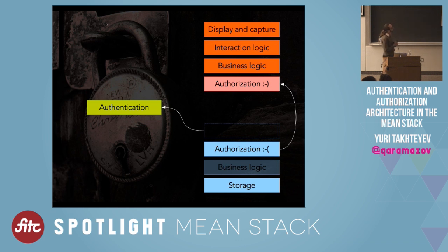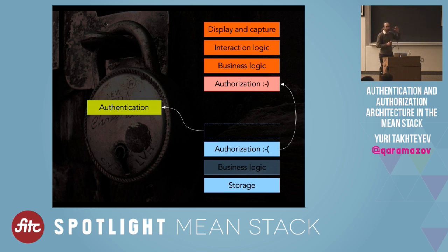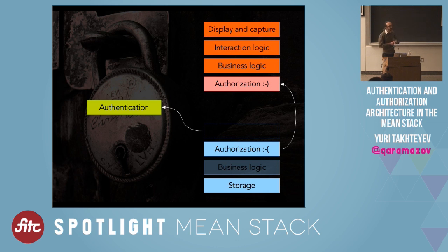I mark them as 'smiley face' and 'frowny face' authorization. The frowny face is real authorization — this is the server's approach, a good cop/bad cop approach. The server is the bad cop: if you send a request, the server checks if you're supposed to be doing it and sends back an HTTP error code saying you're not allowed. The client-side authorization code is the good cop — it's responsible for ensuring you aren't led to think you can do things you're actually not going to be able to do.